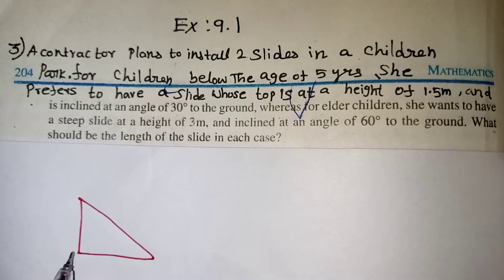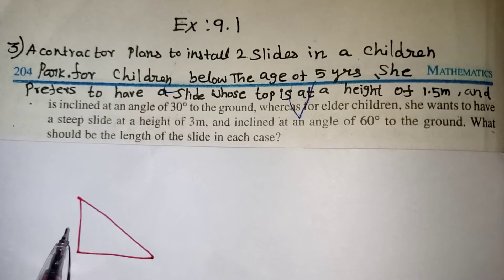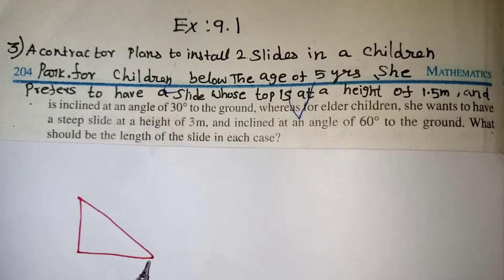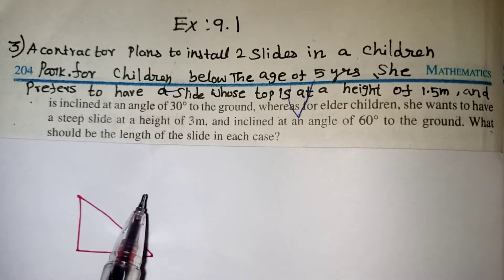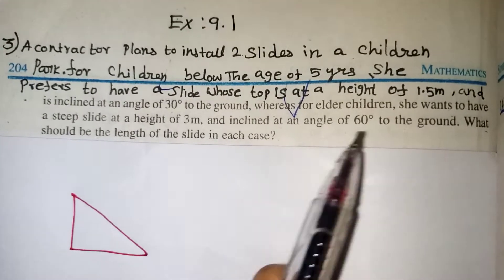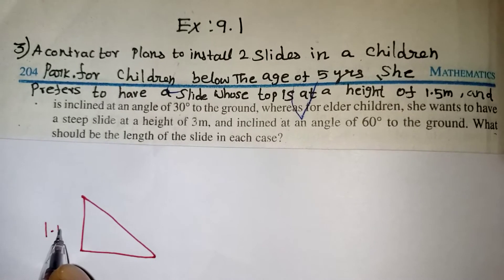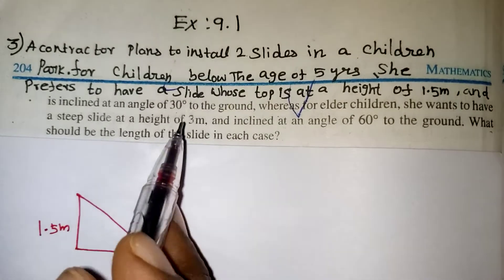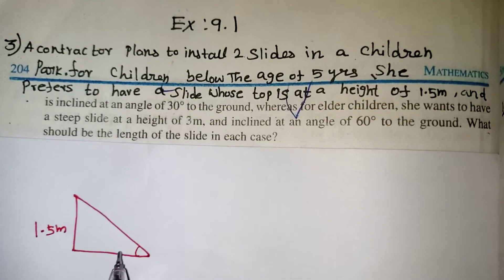The first slide is for the children who are below 5 years. Children will be climbing the ladder here, then they will be sliding. So here they have mentioned clearly it is at the height of 1.5 meter. And the inclined angle is given as 30 degree.